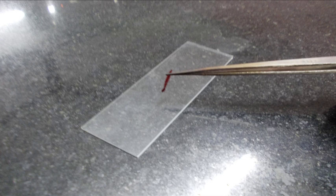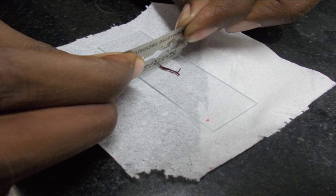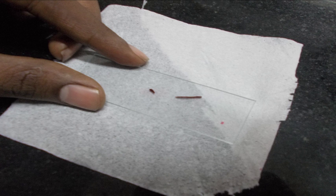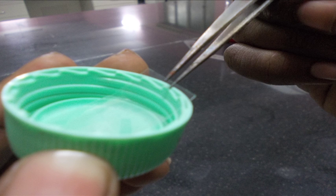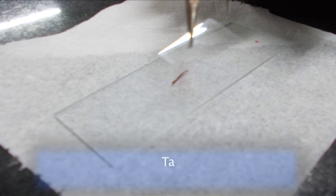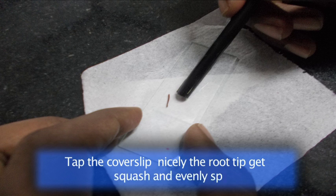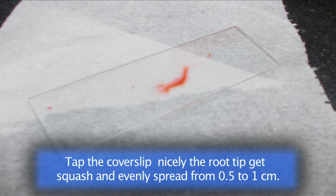Using forceps, take the root and place it in a microscopic slide. Cut and remove the unstained part of the root and cover it with a cover slip. Pressing the root tip will spread it out to a diameter of one centimeter.